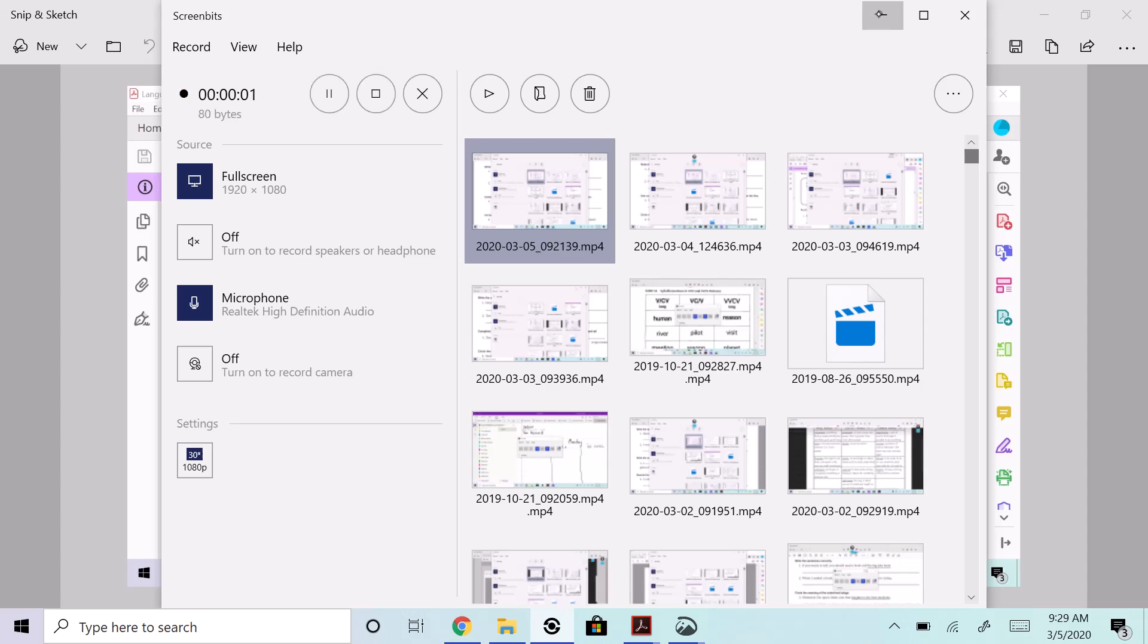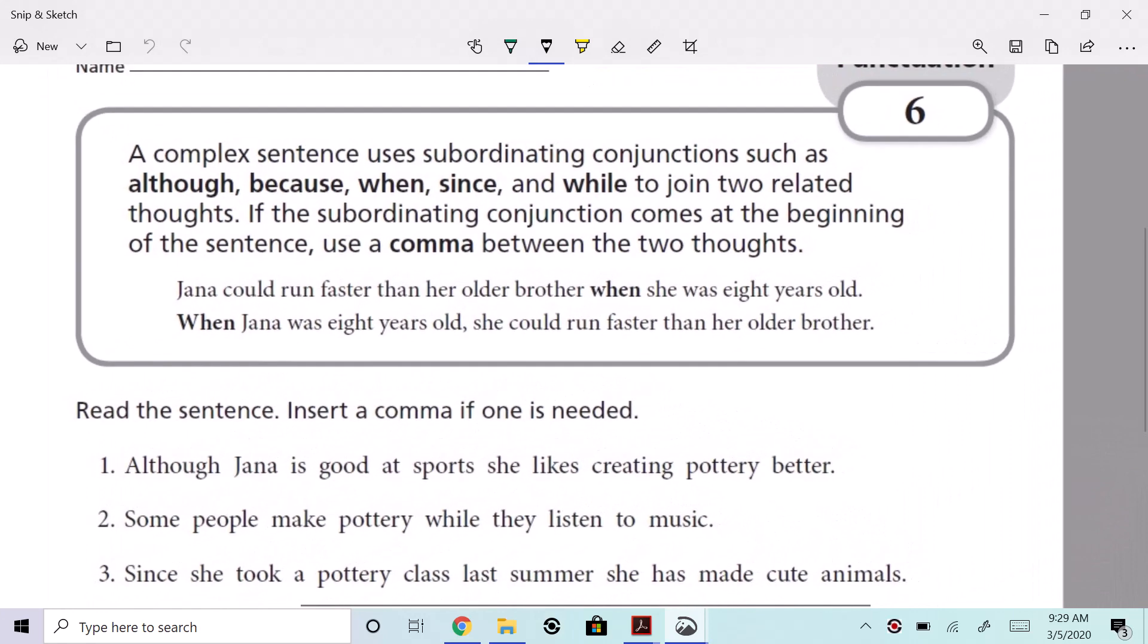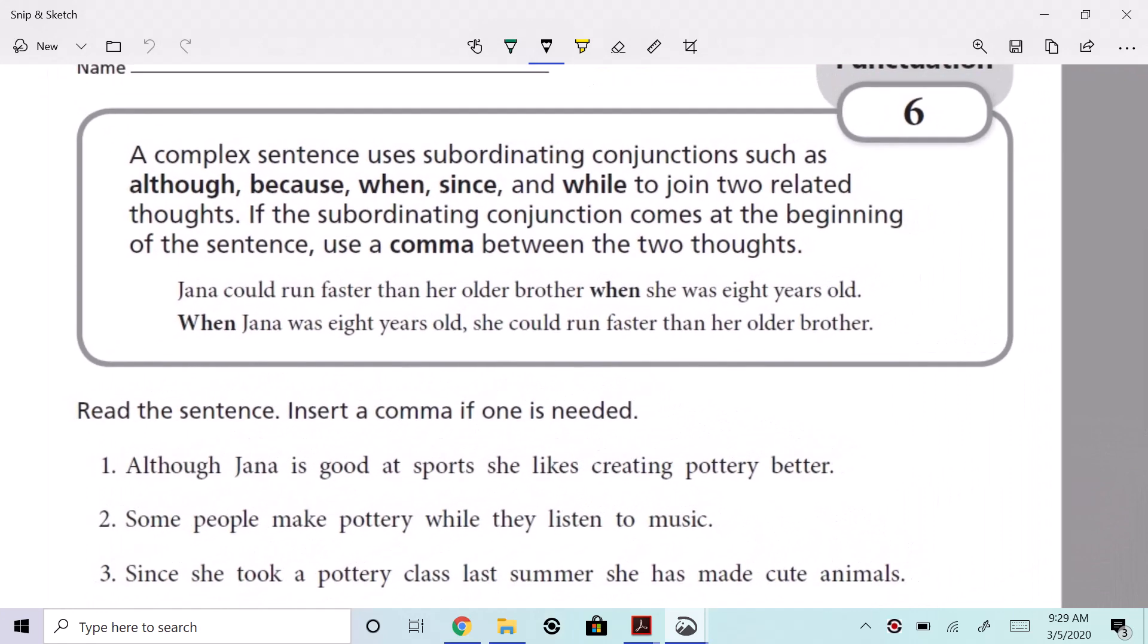Take a look at this first one. Let's look at number six. I'll blow it up. You guys looking at it with me? Well, a complex sentence uses a subordinating conjunction such as although, because, when, since, and while.